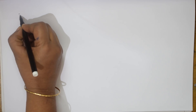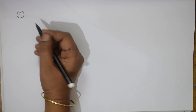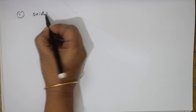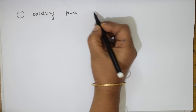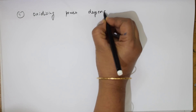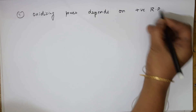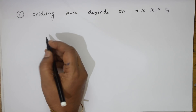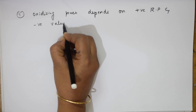The seventh concept: if a question is given about oxidizing power, remember that oxidizing power depends on positive reduction potential, and it also depends on the negative value of Gibbs free energy.